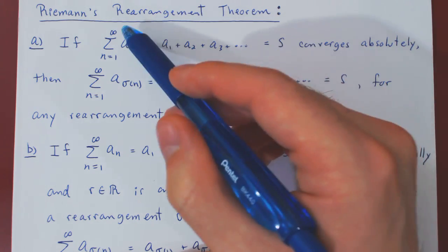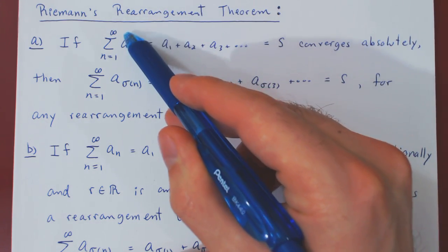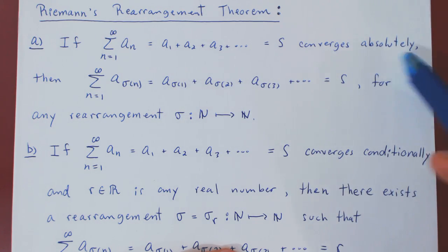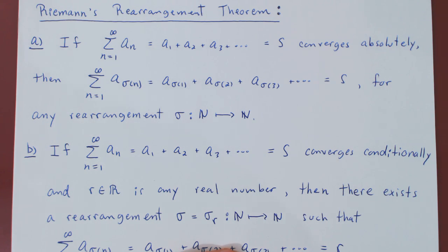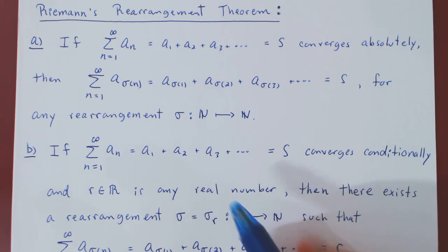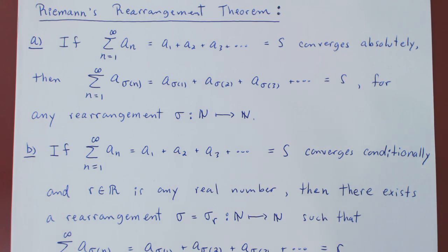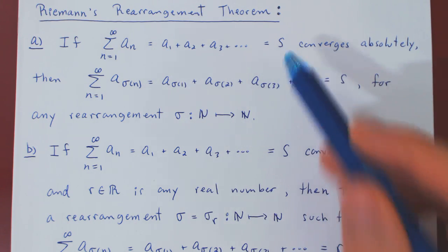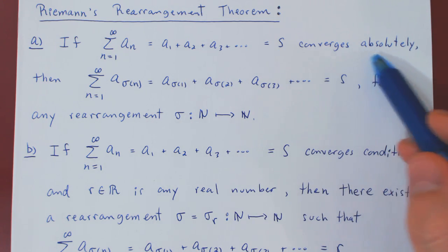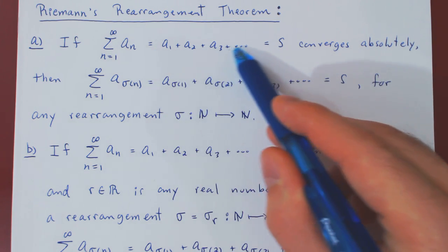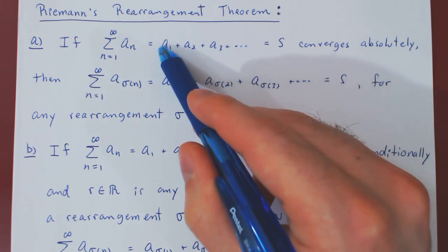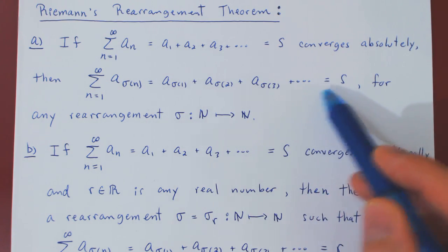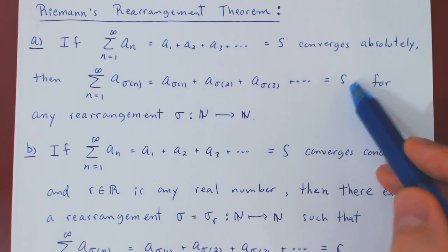With respect to rearrangement, a series that converges absolutely, although being an infinite sum, does behave like a finite sum of real numbers. If you have a finite sum of real numbers, no matter how you rearrange the terms, the sum always yields the same answer. The same is true of infinite series that converge absolutely: if the initial series converges absolutely to S, any rearrangement will also converge to S.